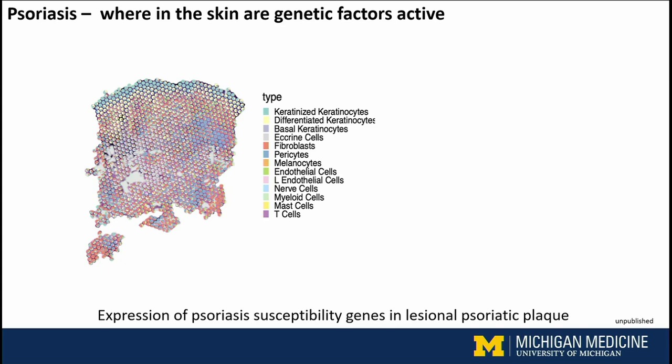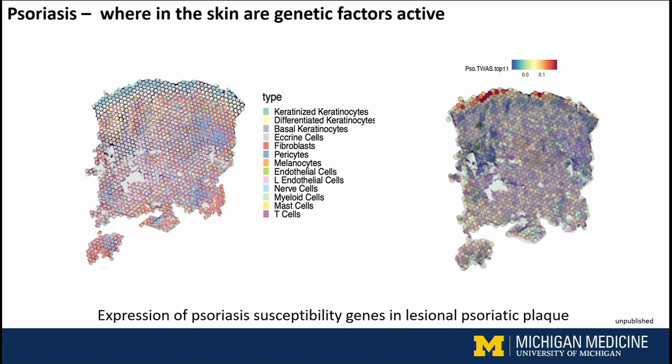You can take your genetic risk variants that you've identified and map them back onto the grid. The more red the color, the greater the number of genetic loci found in that location. As you would expect, most of them are actually found in the upper epidermis — that's where the action is, and that's where you really want to see them.